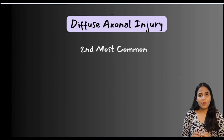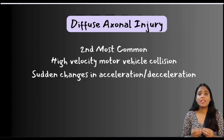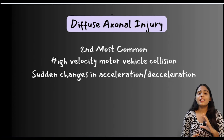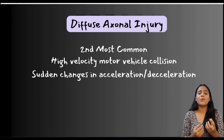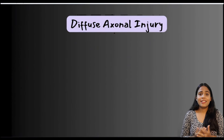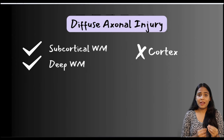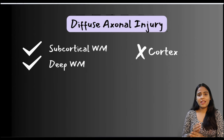Let's talk about diffuse axonal injuries. They are the second most common traumatic intra-axial injuries, seen secondary to high velocity motor vehicle collisions with sudden changes in acceleration and deceleration. As a result, the gray matter moves at a speed different than the subcortical white matter, causing stretching of the axons at the gray-white matter interface. DAIs involve the subcortical and deep brain white matter and typically spare the cortex.